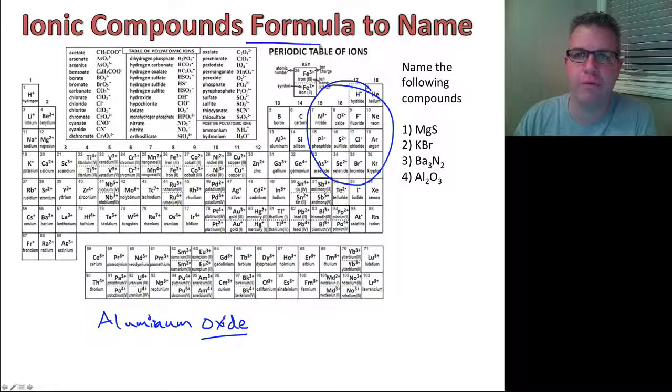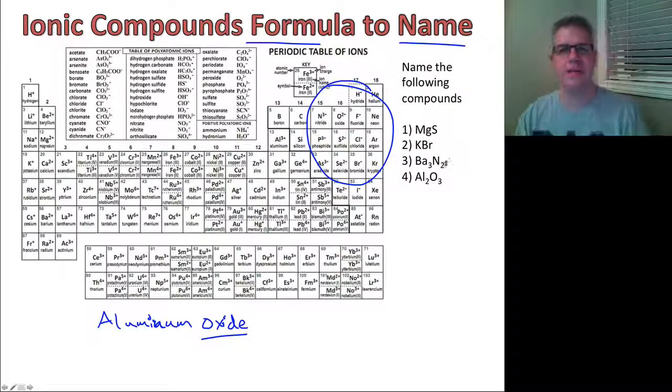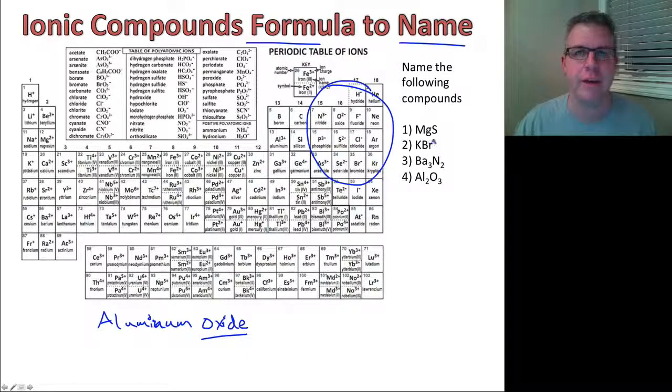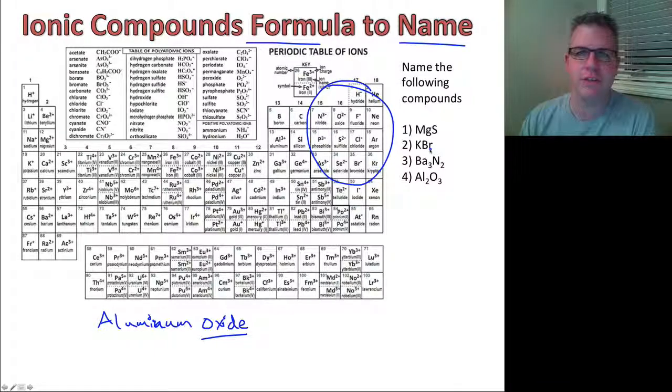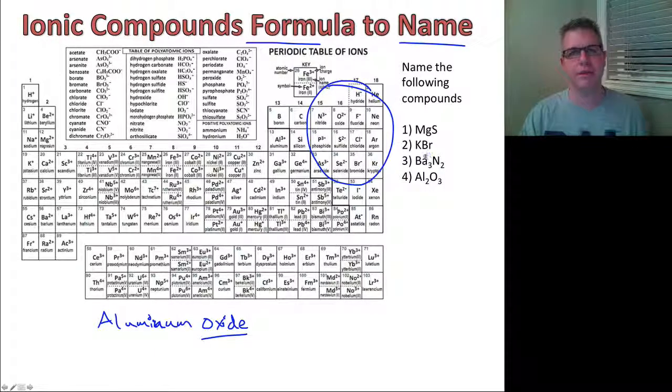So this is how to go from formula to name. It's the easiest way to go. In our next video, we're going to look at how to go from name to formula. This is just practice, like I've said before. Do as many as you can. It's just repetition. Just like very basic, simple math. Just repetition and familiarity with the periodic table.